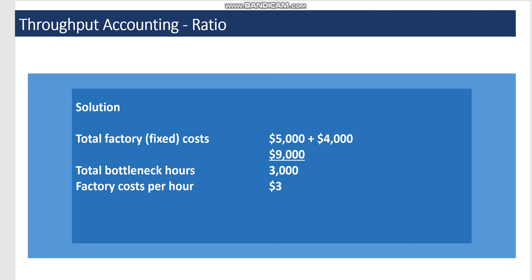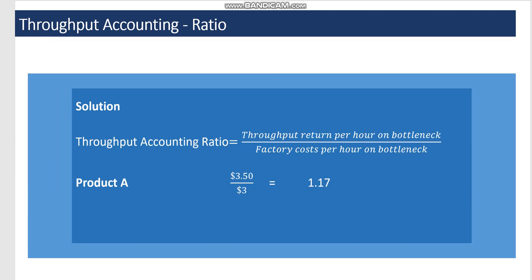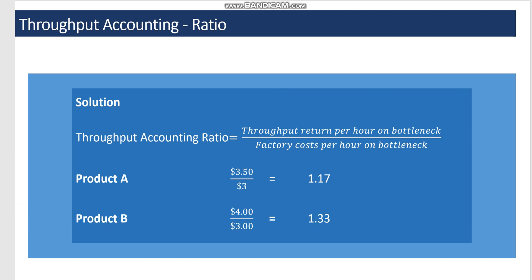Putting the numbers into the ratio — throughput return per hour divided by factory cost per hour — product A gives 3.5 divided by 3, which is 1.17, and product B gives 4 divided by 3, which is 1.33. Since product B has a higher throughput accounting ratio than A, it is ranked first priority, while product A is ranked second.